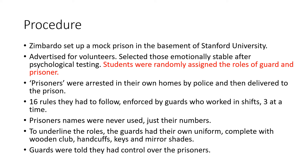Prisoners were arrested in their own homes by the police and delivered to the prison, making it quite realistic. They had 16 rules to follow, enforced by the guards who worked in shifts of three. The prisoners' names were never used — only their numbers — so their identity was completely stripped. To underline the roles, guards were given their own uniform, a wooden club, handcuffs, keys, and mirrored sunglasses, and were told they had complete control over the prisoners.